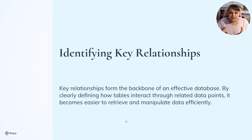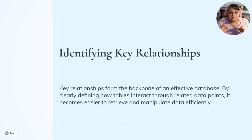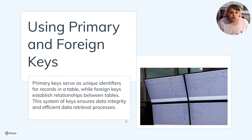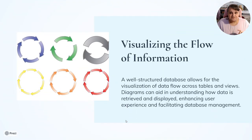Identifying key relationships: key relationships form the backbone of any effective database. They call them relational databases because the databases take the information, make it related, and link together. By clearly defining how tables interact through related data points, it becomes easier to retrieve and manipulate data efficiently. Primary keys serve as unique identifiers for records in a table, while foreign keys establish relationships between tables. A well-structured database allows for the visualization of data flow across tables and views — diagrams can aid in understanding how data is retrieved and displayed, enhancing user experience and facilitating database management.